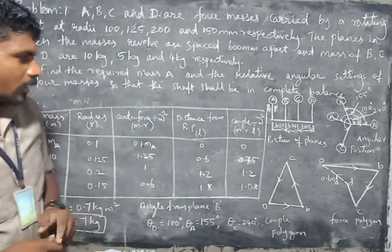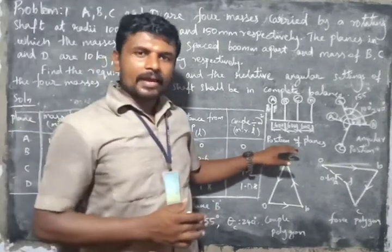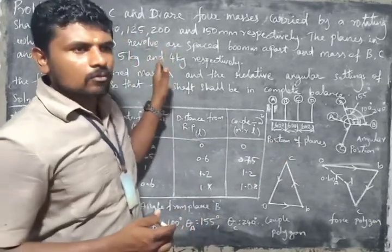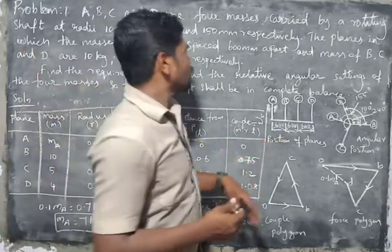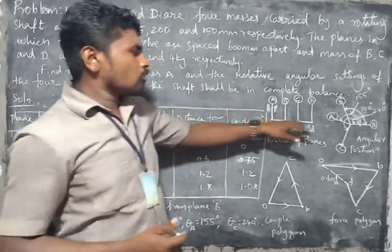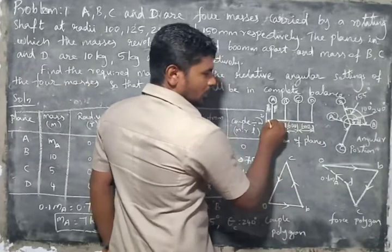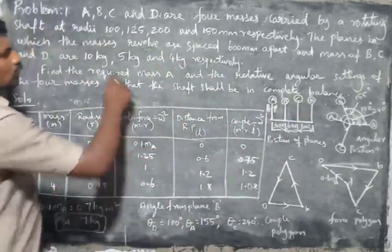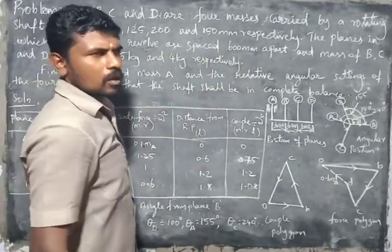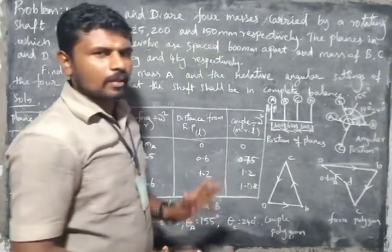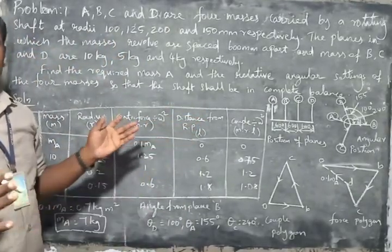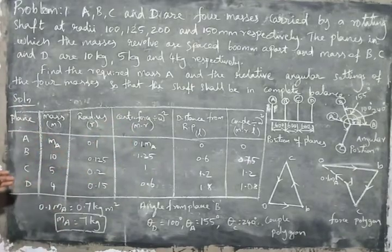First, we need to draw a position of plane diagram. Using the given problem data only, we can draw this diagram. They give 4 planes A, B, C, and D, so we can directly draw a shaft and mark those 4 planes. They mentioned that the planes are spaced 600mm apart, so every plane has a spacing of 600mm. Then we need to go directly to the table.